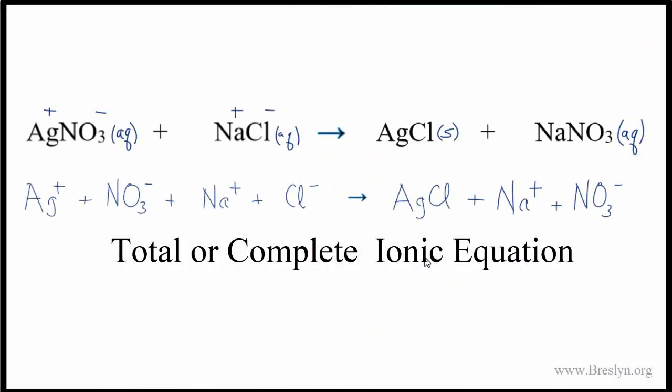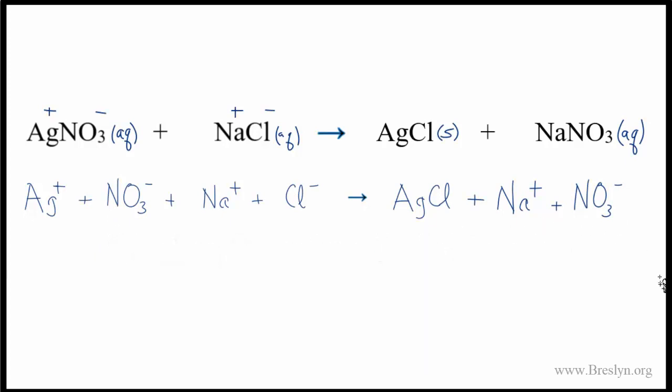This is the total ionic equation, and from this we can write the net ionic equation. When we write the net ionic equation, we're looking for what changed in the reaction. We have NO3- here and NO3- here—it didn't change, so we cross that out. The Na+ and the Na+ didn't change. We have Na+ in the test tube and Na+ in the beaker, no change.